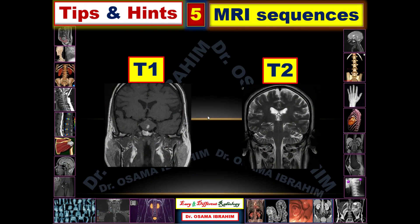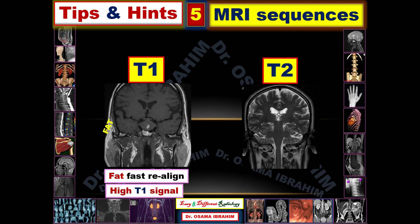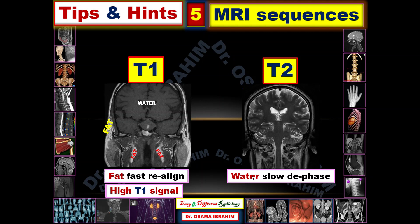On this lumbar spine image, fat has fast spin realignment, so it has high signal in T1, like subcutaneous fat appearing bright and parapharyngeal fat appearing bright. However, water has low signal in T1. In T2, it depends on the rapidity of dephasing: water has slow dephasing so it appears as high signal in T2, like water in the ventricles.